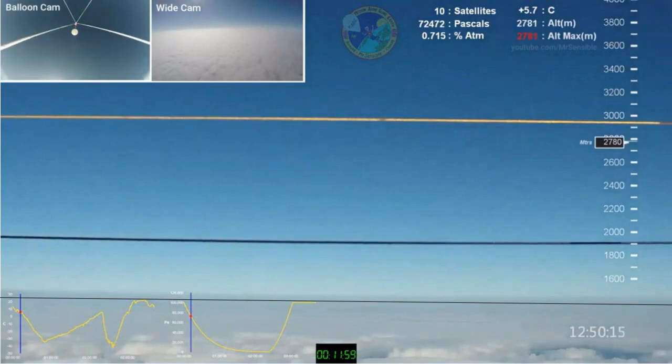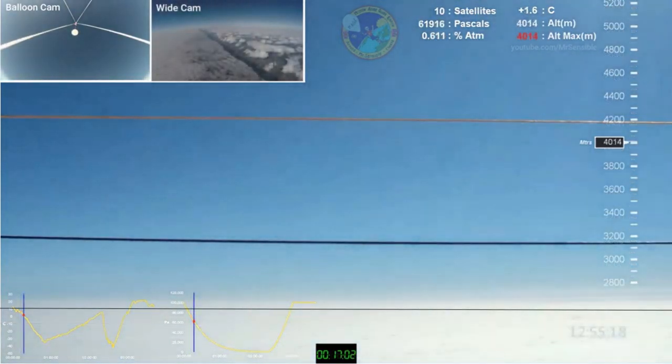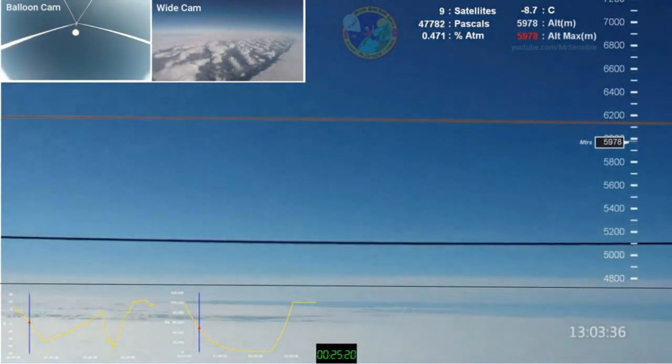Here's a still at 2,781 meters or 9,124 feet. Ball earthers must still agree that there should not be any perceptible curvature at that low altitude. As you can see, the apparent horizon is flat as expected and there is little to no barrel distortion. Here's a similar still at 2,856 meters or 9,370 feet. Again, there is little to no barrel distortion. This still is 4,014 meters or 13,169 feet. Little to no distortion and the horizon is flat. Next is 5,978 meters or 19,612 feet. Little to no distortion and a flat horizon.